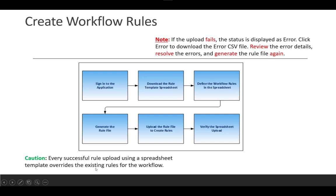Once you verify, the result is either failed or successful. As mentioned, every successful rule upload using the spreadsheet template overrides the existing rules for the workflow. Once successful, go to GL Journal for example, create a journal, and check the approval status — confirm it is sent to the approvers based on your conditions. If it fails, Oracle gives you the option to download the CSV error file, review the exceptions, resolve the errors, and re-upload until you get a successful status.